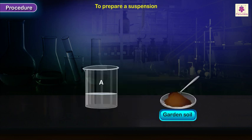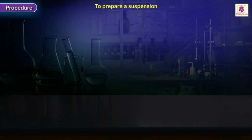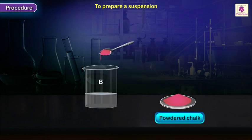Add a spoonful of garden soil in beaker A. Add powdered chalk in beaker B.